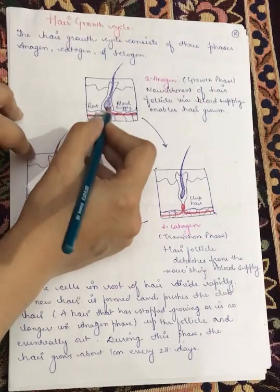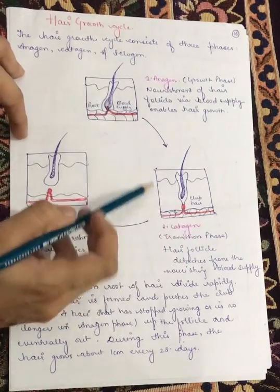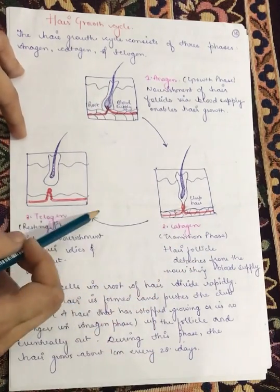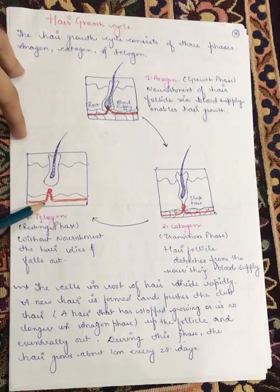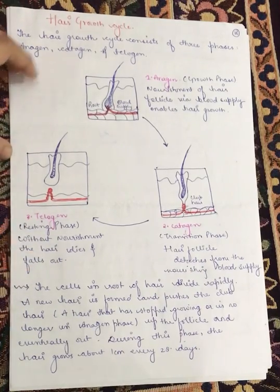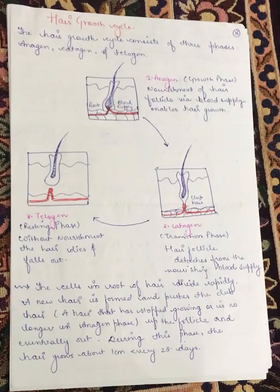Anagen is the growth phase — it provides nourishment to the hair follicle via blood supply, enabling hair to grow and live. Catagen is the transition phase, during which the hair follicle detaches from the blood supply. Telogen is the resting phase — without nourishment the hair dies and falls off. Cells in the root divide rapidly, a new hair forms and pushes out the club hair, which is the hair that has stopped growing.